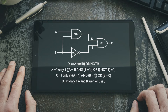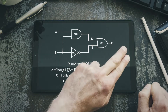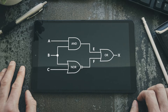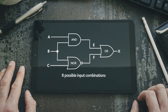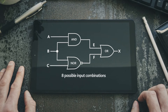3 inputs and 6 gates will be the most complex logic circuit for which you will need to produce a truth table. Here is an example with 3 inputs. For any logic circuit with 3 binary-valued inputs, there are 2 to the power 3, or 8 possible combinations of values, so we will need 8 rows in the truth table.